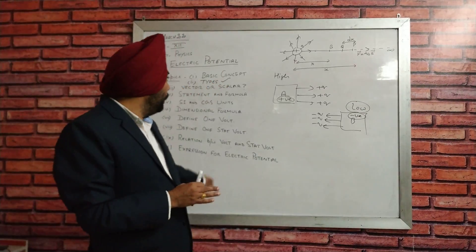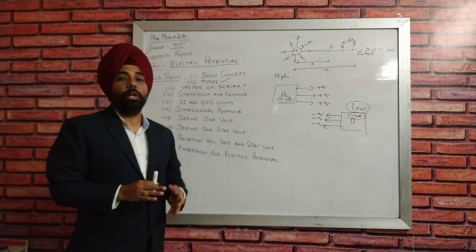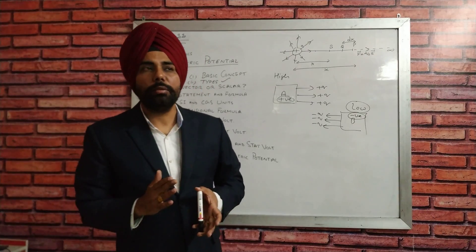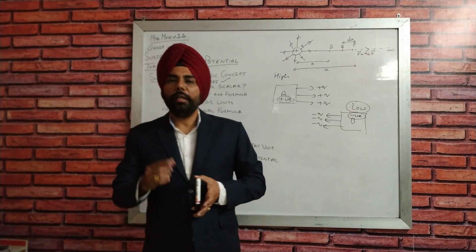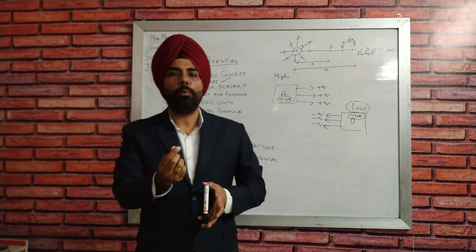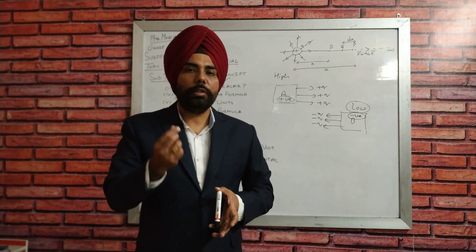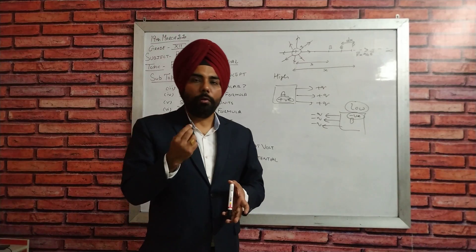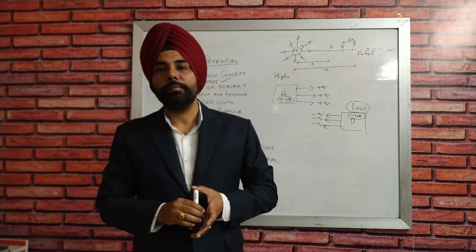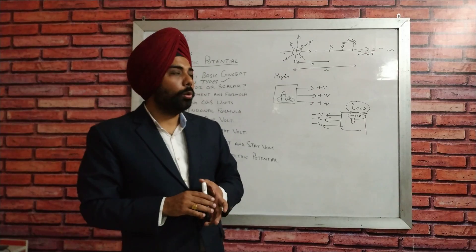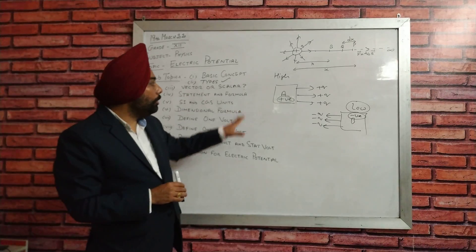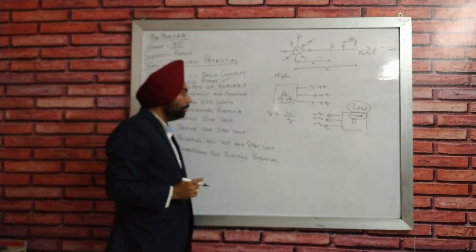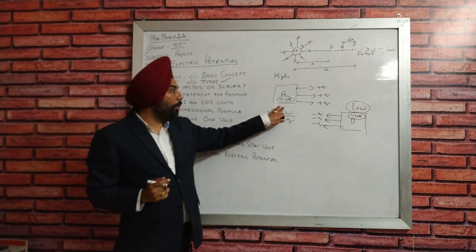Now going to the basic term — the statement and the formula of electric potential. The basic statement for electric potential is: if we bring a positive unit charge from infinity to a particular point, then the amount of work done is stored as electric potential. So the basic formula is always going to be: potential V equals work upon charge, i.e., V = W/Q.